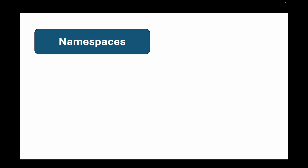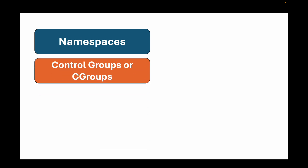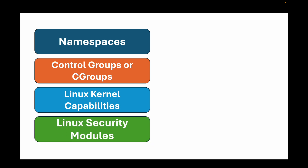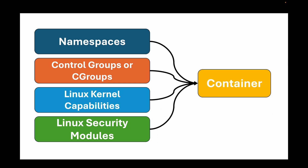Containers are made up of low-level technologies. On the Linux side, these are: namespaces, control groups (cgroups), Linux kernel capabilities, and the Linux security module. These are the low-level technologies used when we talk about containers. A container is made up of all four of these technologies together, which provides us with an isolated environment.